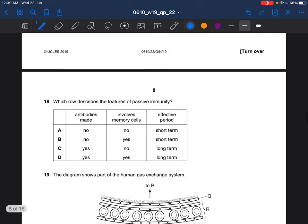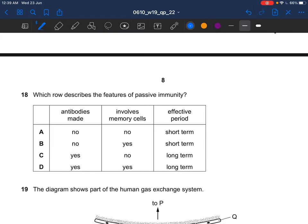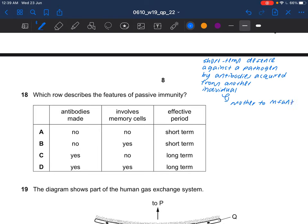Next question. Which role describes the features of passive immunity? Passive immunity is the short term defense against a pathogen, acquired from another individual. An example of this would be from mother to infant, but it will be short term because no memory cell is produced, no antibodies are made by the body. So the answer would be A.